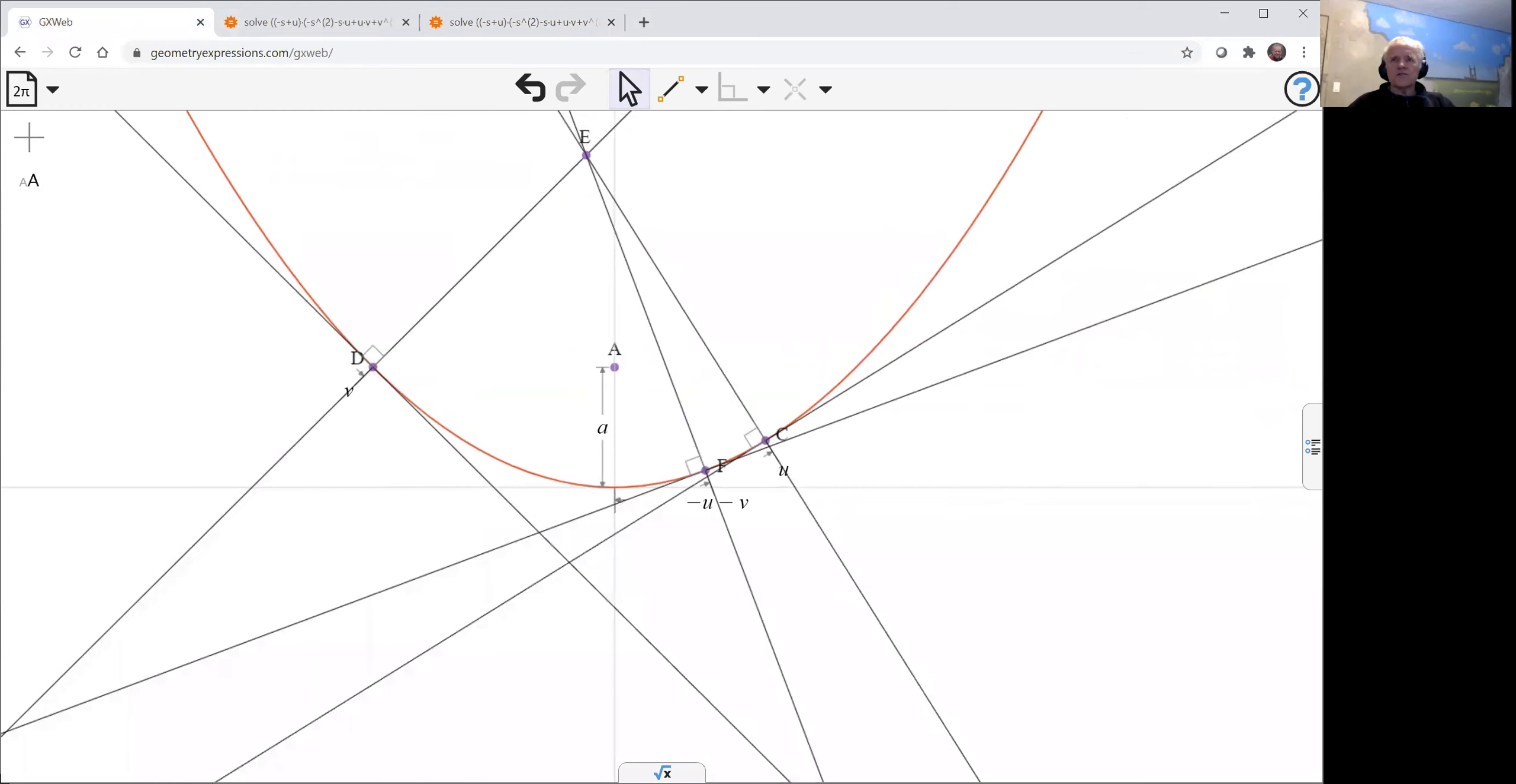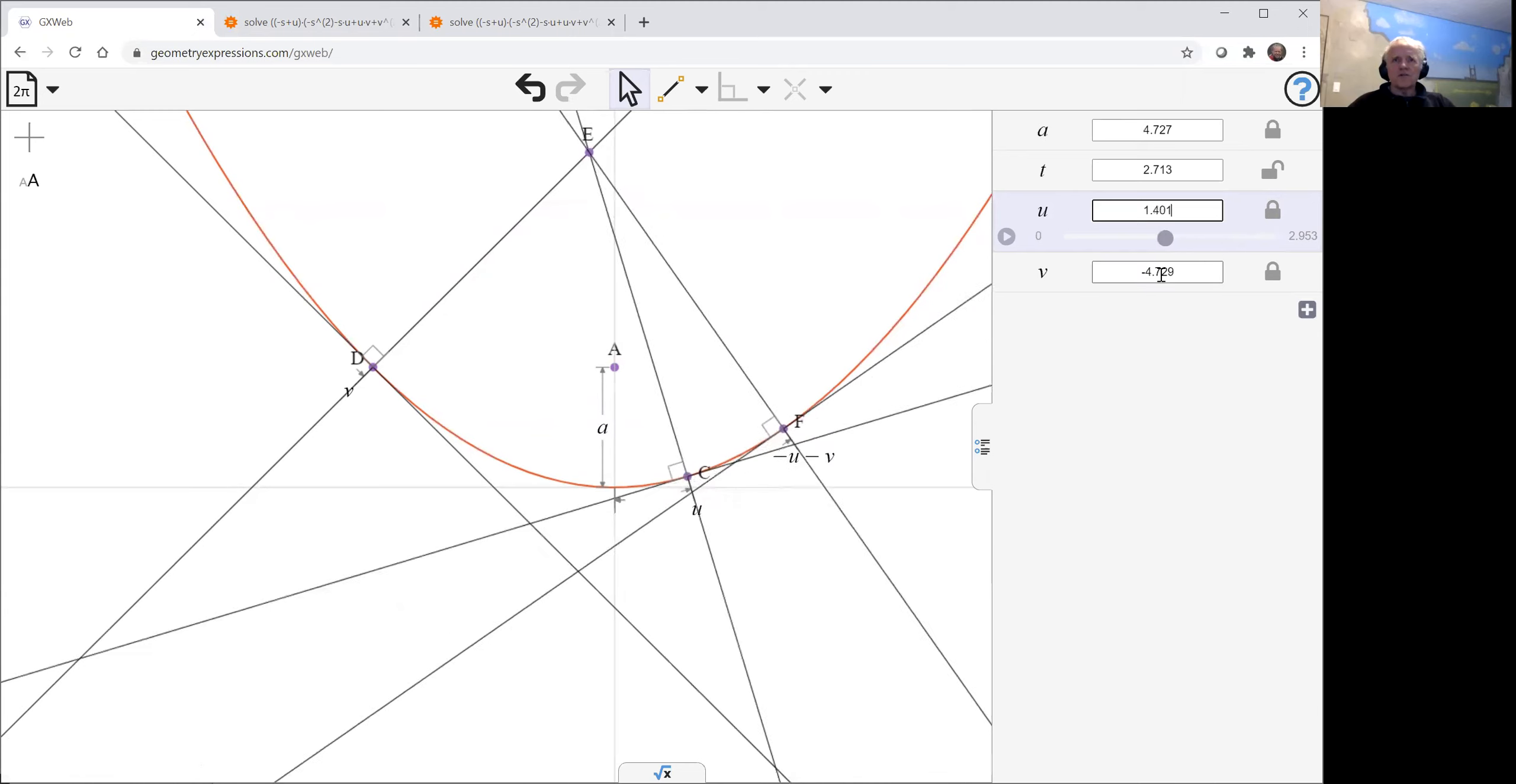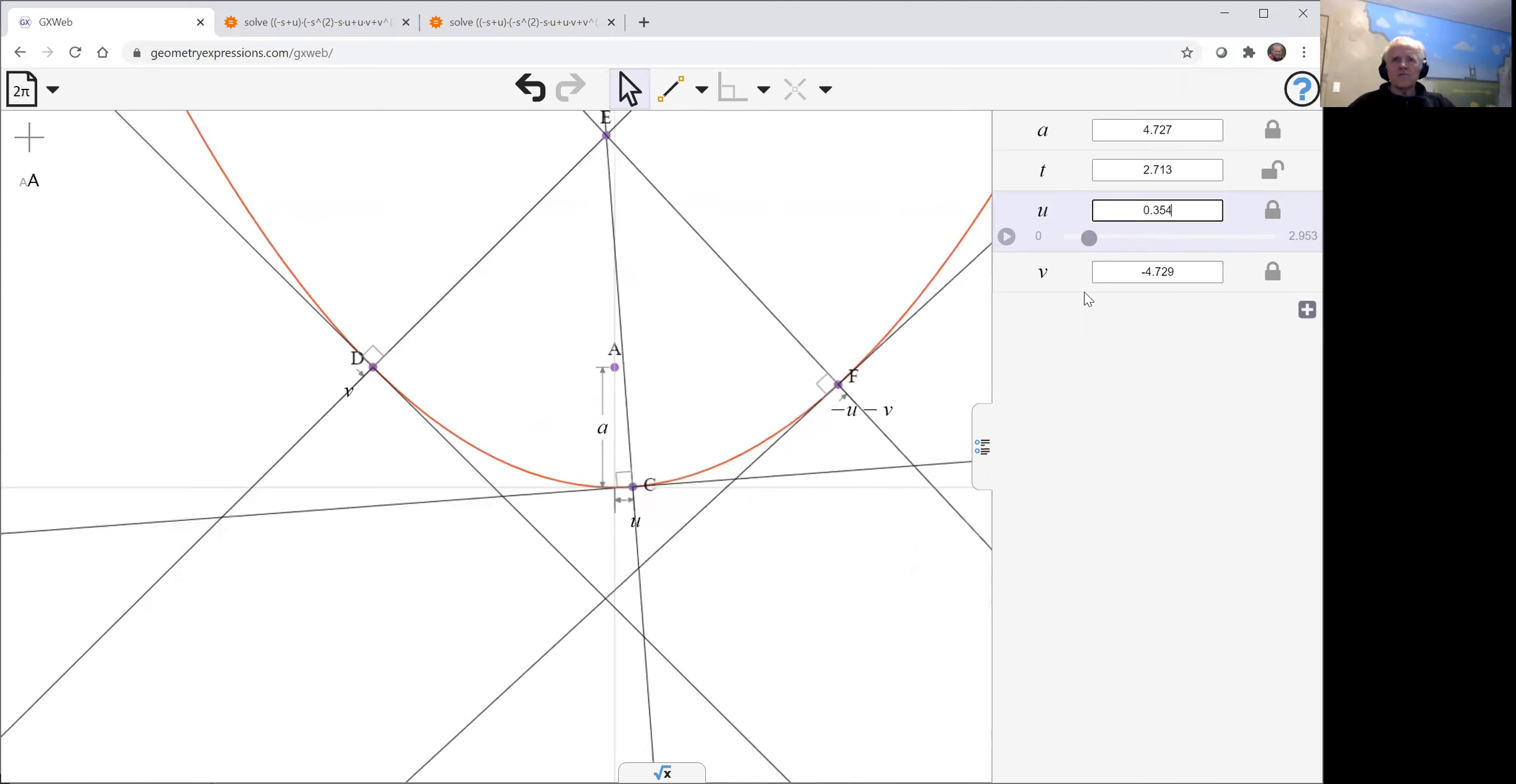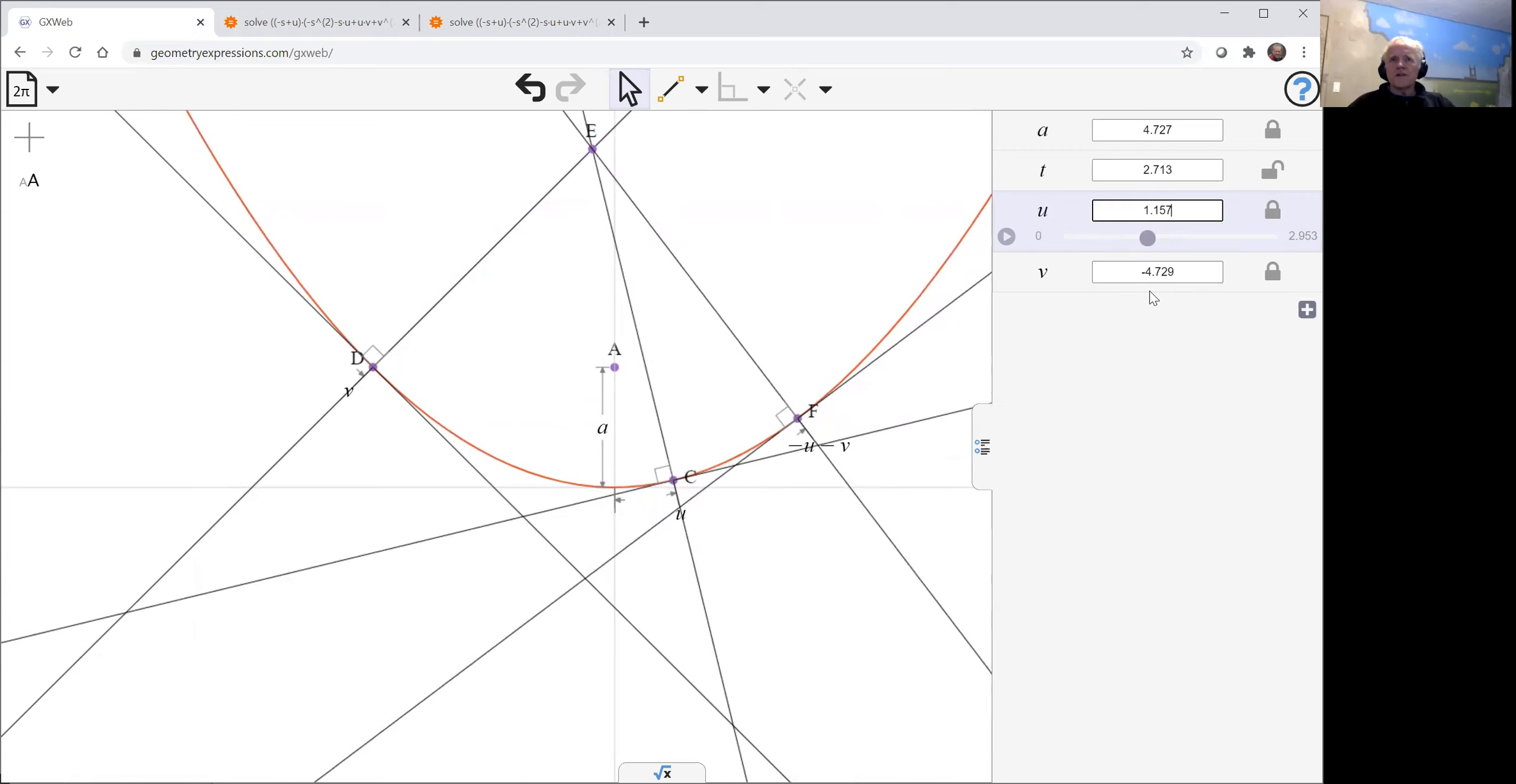Let's just play with u and v a little bit. And we can watch what happens as we move u and v around. And we can see that in fact those three normals do in fact go through e. So now we'd like to look at the circle that passes through these three points.